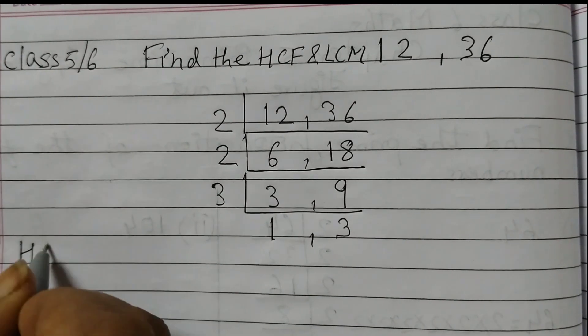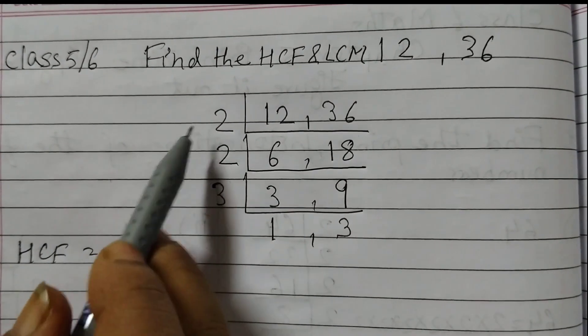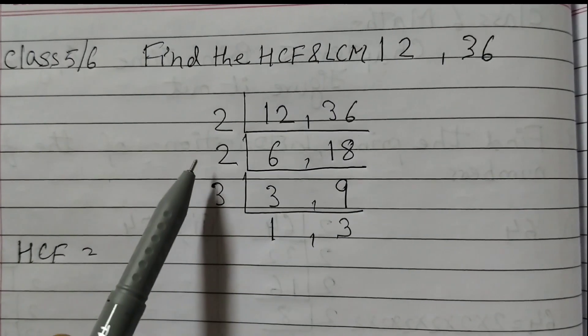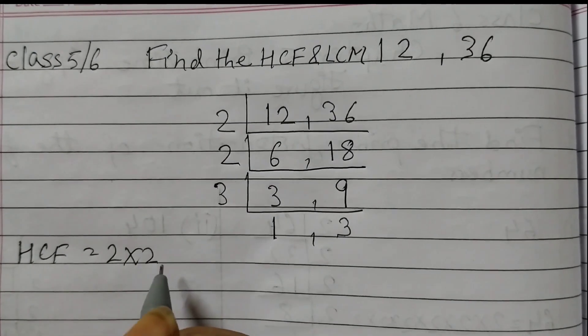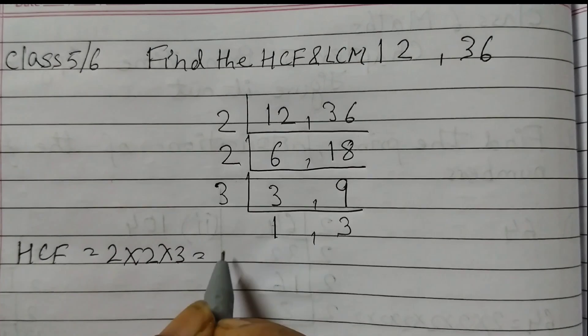To find the HCF we will multiply these numbers on the sides: 2 into 2 into 3. So 2 times 2 is 4, and 4 times 3 is 12.